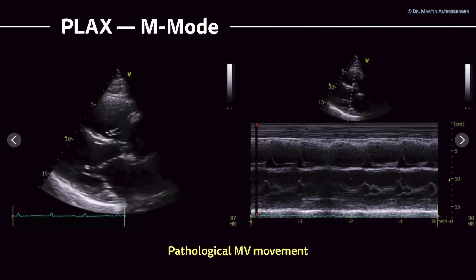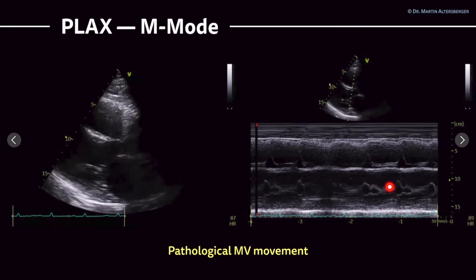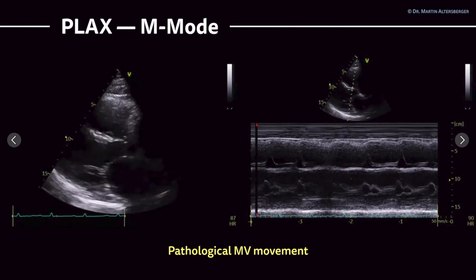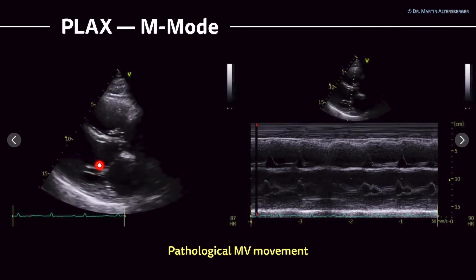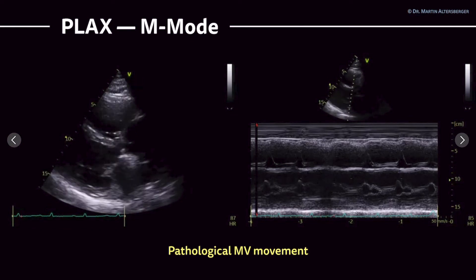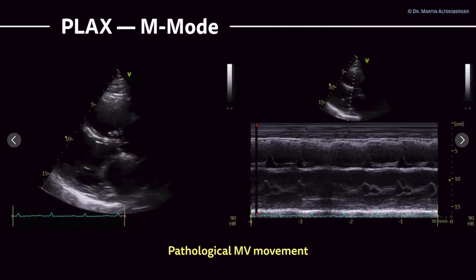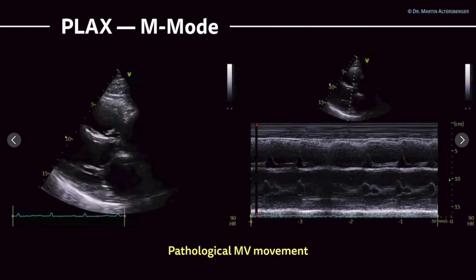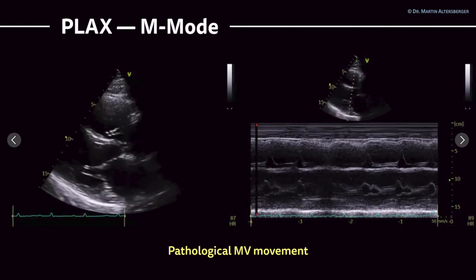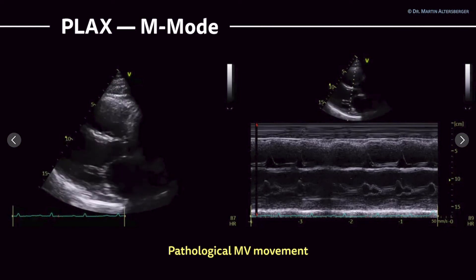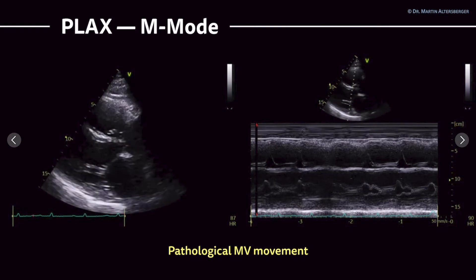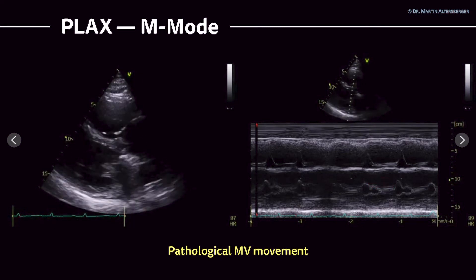We can focus here on the mitral valve, and this is definitely a pathological movement. We can display this already in the B-mode image where we see a reduction in the opening of the mitral valve, but not due to stenosis — it's not mitral stenosis we are seeing, but it's probably severely reduced left ventricular function. And we have this premature closure of the valve, which we do see here and in the M-mode measurement.